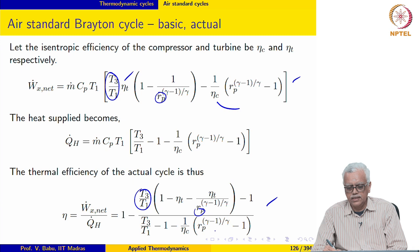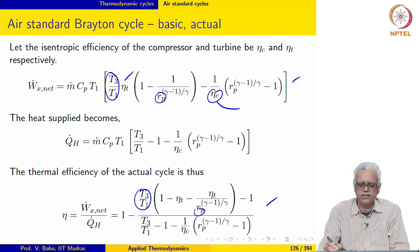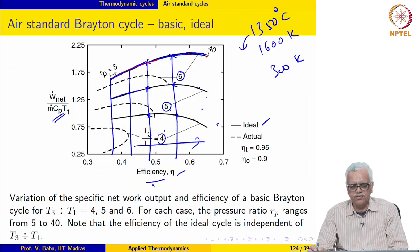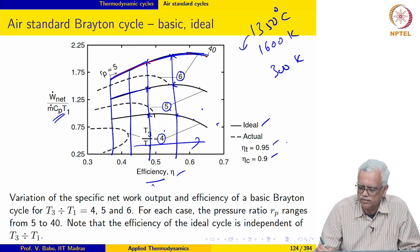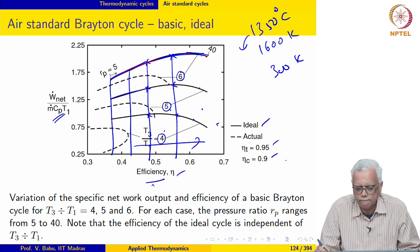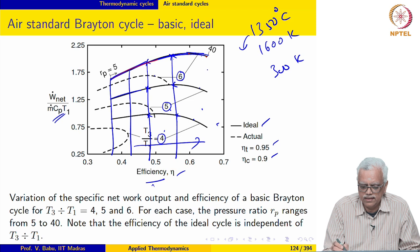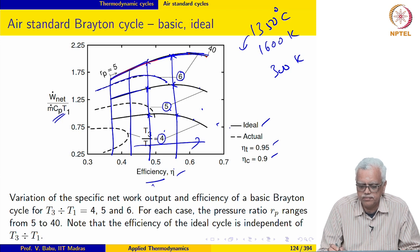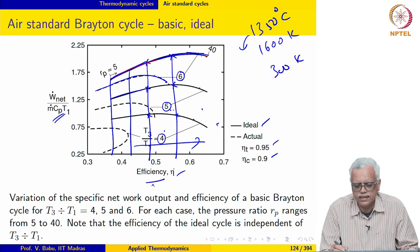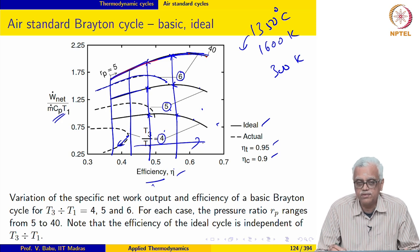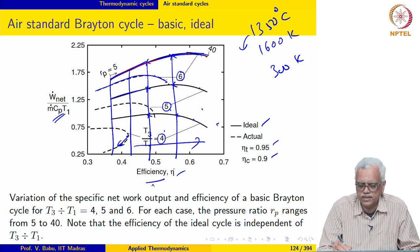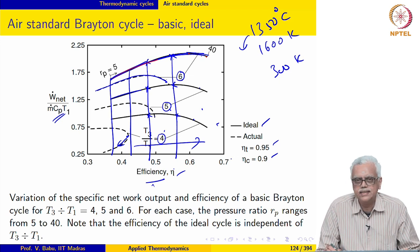In the case of the actual cycle, both the isentropic efficiency of the turbine and the compressor are involved. These are shown using the dashed lines corresponding to η_t equal to 0.95 and η_c equal to 0.9. The general trends are the same — efficiency now depends on T3 over T1, and efficiency generally increases with Rp. These curves have Rp going from 5 to 40, but at higher values depending on T3 over T1, efficiency also begins to decrease even though we are increasing Rp.